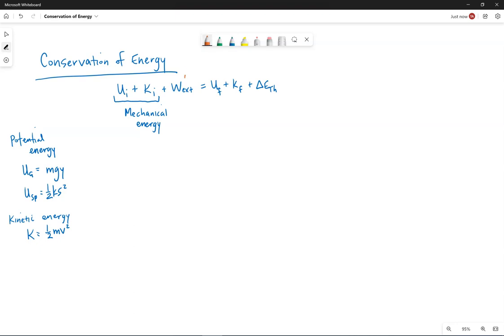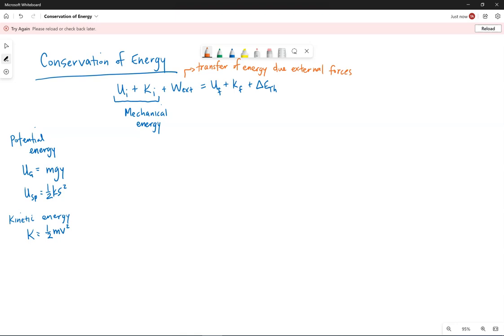Work external is the transfer of energy due to external forces. Ultimately, we mean not gravity because we are accounting for gravity in the potential energy term. Not a spring because we are accounting for any spring forces and the energy in relation to the potential energy, and not kinetic friction.